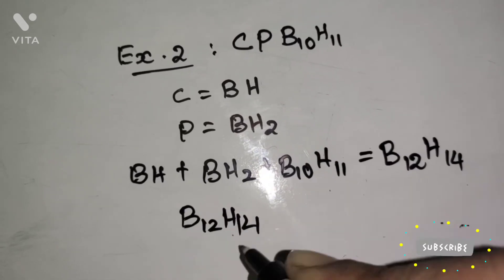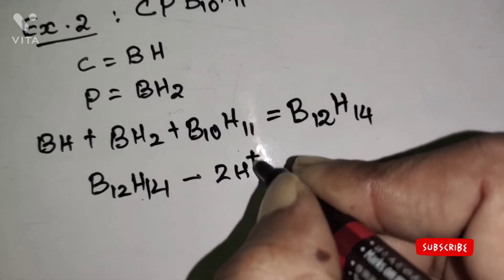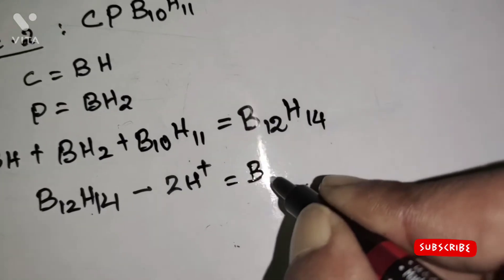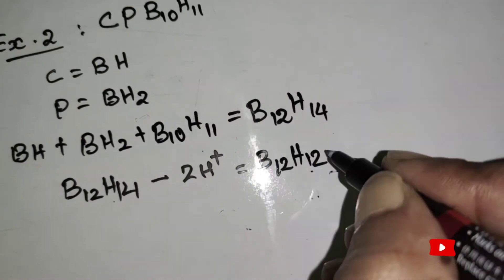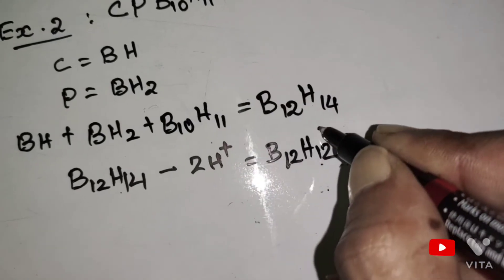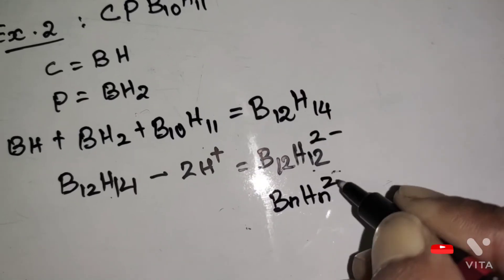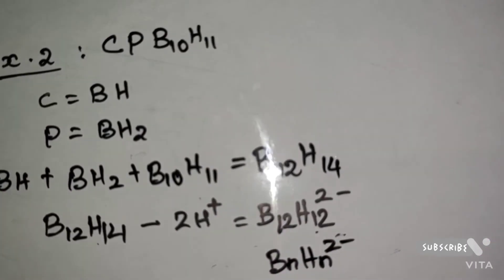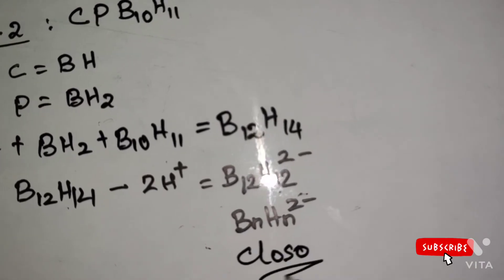We have B12H14. Subtracting 2 H⁺ ions from the formula to equalize the boron and hydrogen atoms gives B12H12, with 2 hydrogen atoms removed. The total charge on the formula is 2−. This formula is also written as [BnHn]²⁻. [BnHn]²⁻ is a closo type of cluster. Therefore, CPB10H11 is a closo type of cluster.